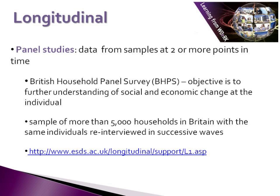With longitudinal research design, there are two main branches. The first is panel studies, which involve collecting data from samples at two or more points in time. An example is the British Household Survey, which provides information on social interest issues such as household organisation, employment, housing, income, wealth, health, socioeconomic values, and residential mobility. The British Household Survey was designed as an annual survey of adults aged 16 and over, with a sample of 5,000 interviewed in successive waves. It provides the UK component of the European Community Household Panel Survey. If you want to find out more, visit the Economic and Social Data Service (ESDS) using the web link on the slide.